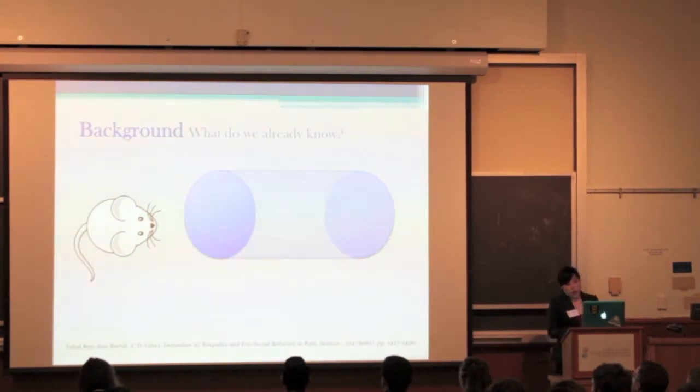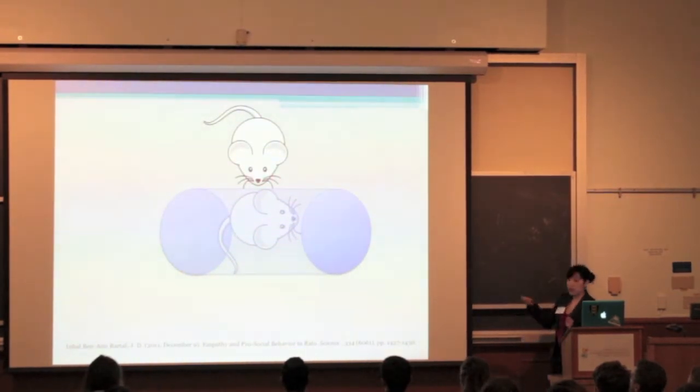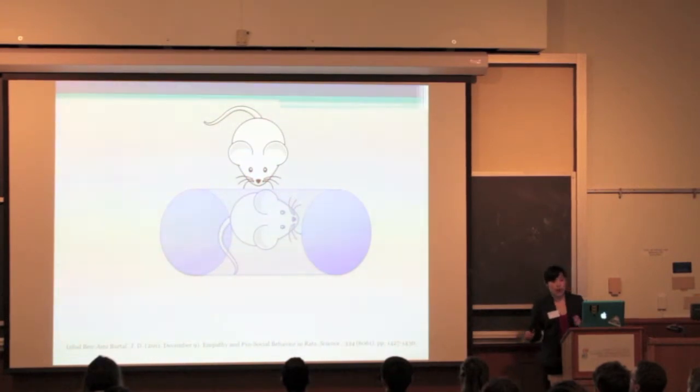The dominant rat did not open the restrainer when it was empty or when it contained an inanimate object. The researchers then thought that the expectation of playing with its trapped cage mate might lead to the dominant rat opening the door. But even when social contact was prevented, the rat still freed its cage mate.